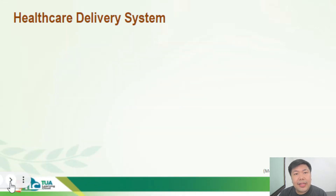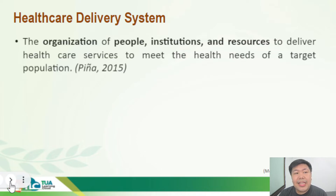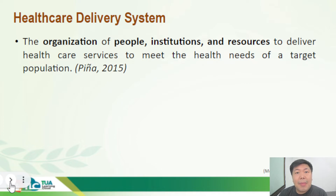First, let's understand how the health care delivery system works. When we say health care delivery system, this is an organization of people, institutions, and resources whose goal is to meet the health needs of a target population by providing them with health care services. There are different types of health care delivery systems.